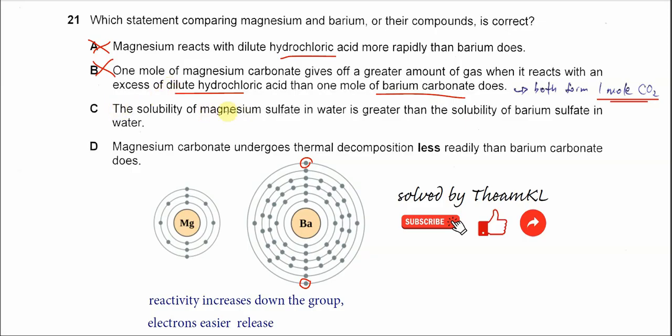For C, the solubility of magnesium sulfate in water is greater than the solubility of barium sulfate in water. Yes. Solubility of group 2 sulfate decreases down the group, so barium sulfate has a lower solubility compared to magnesium sulfate. So this is the correct answer.